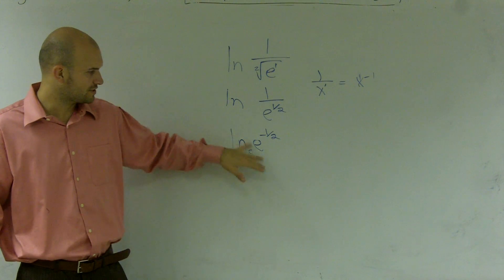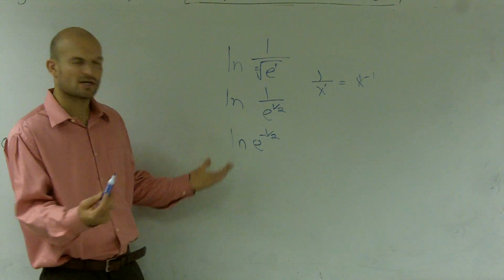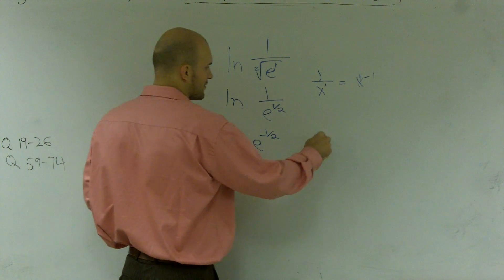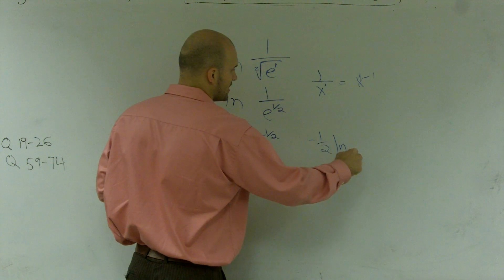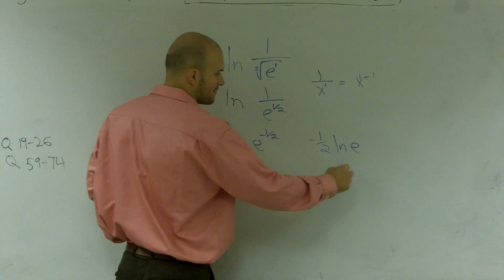1, right? You guys should always know that e raised to the e power equals 1. Well, there's a couple ways you could do this. You could bring this negative one-half in front and have ln of ln of e. Well, I know ln of e is 1, so therefore my answer is negative one-half.